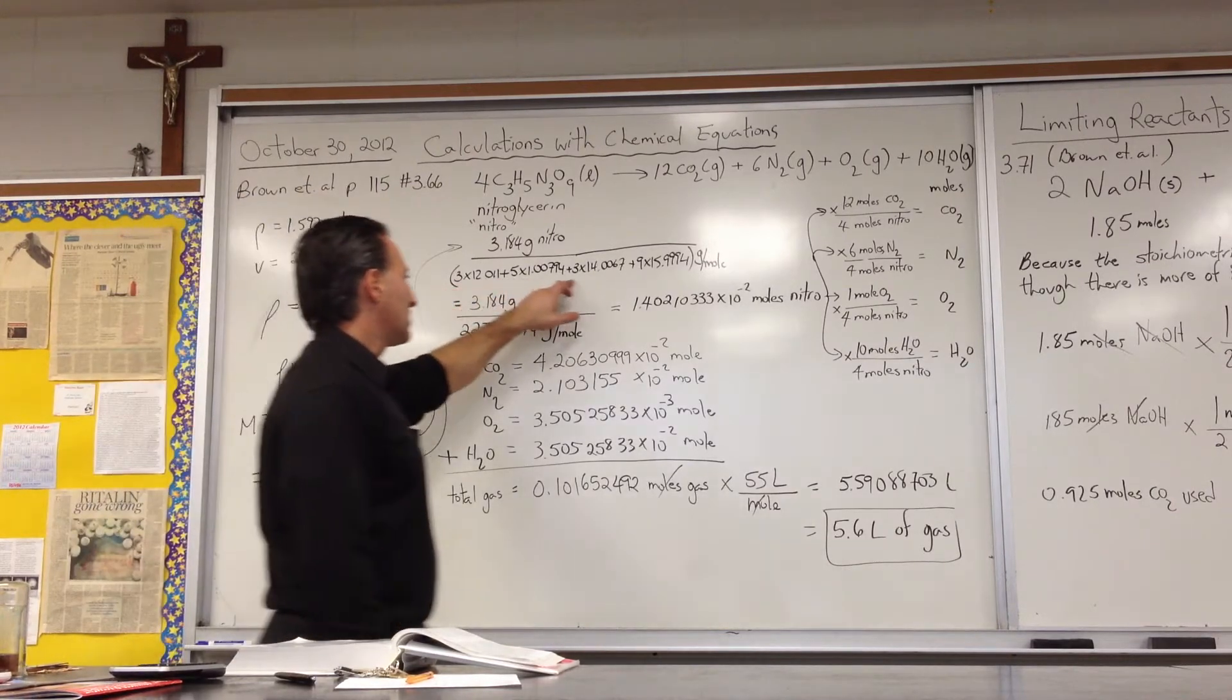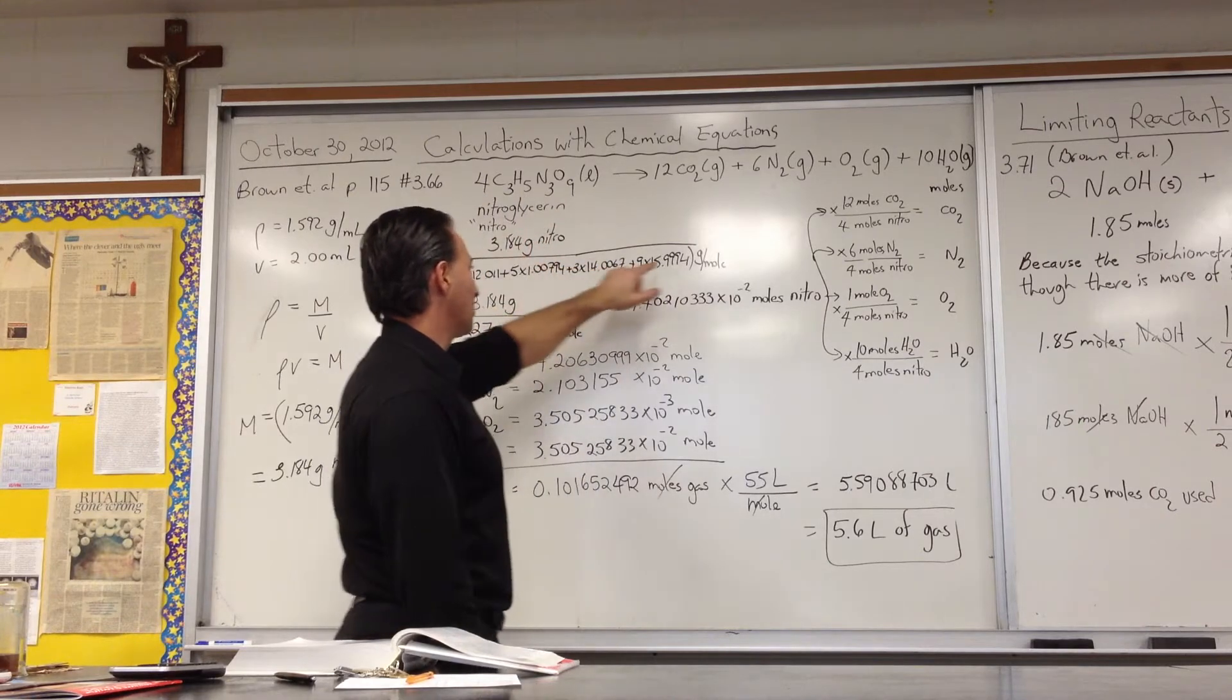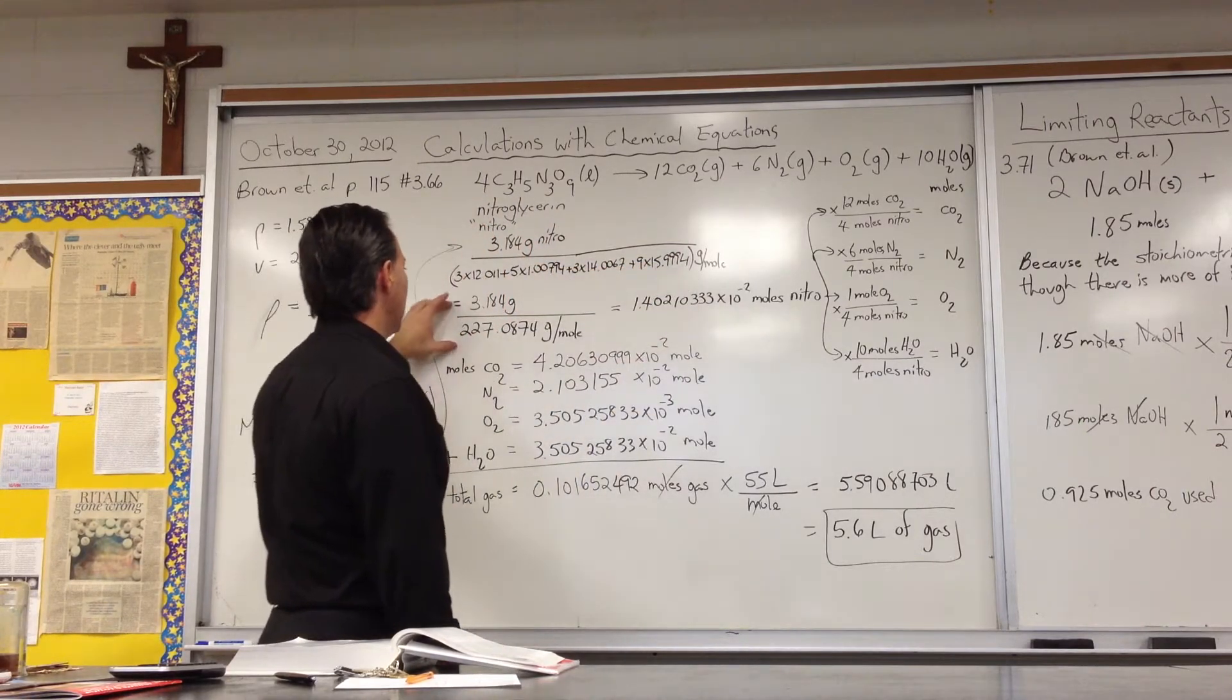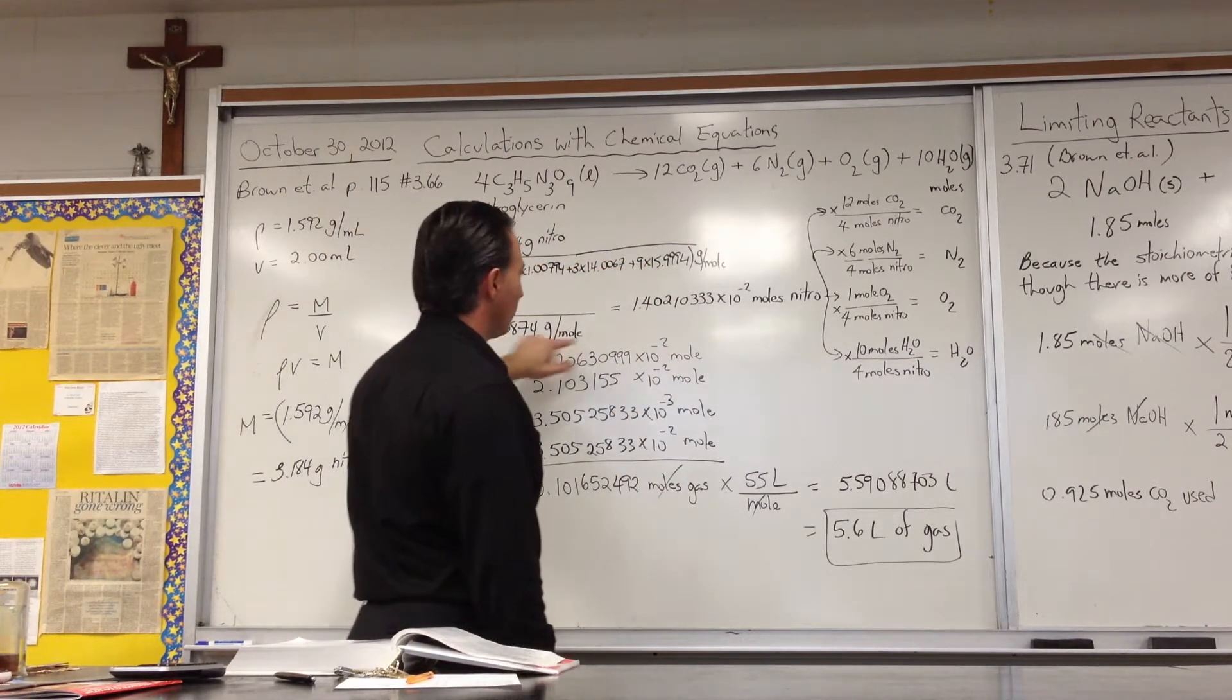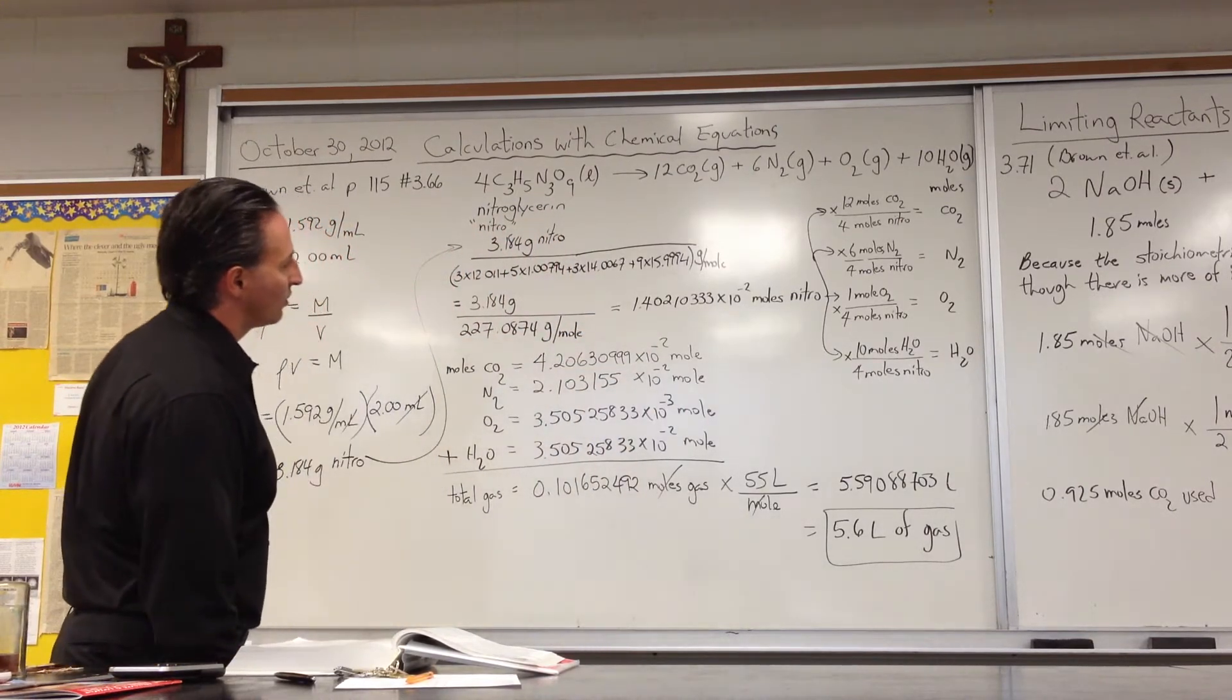We then divide by the molar mass of nitroglycerin to find the moles of nitroglycerin. Because the grams will cancel. I showed that here. This is 227 grams per mole. There are 1.4 times 10 to the minus 2 moles of nitroglycerin.